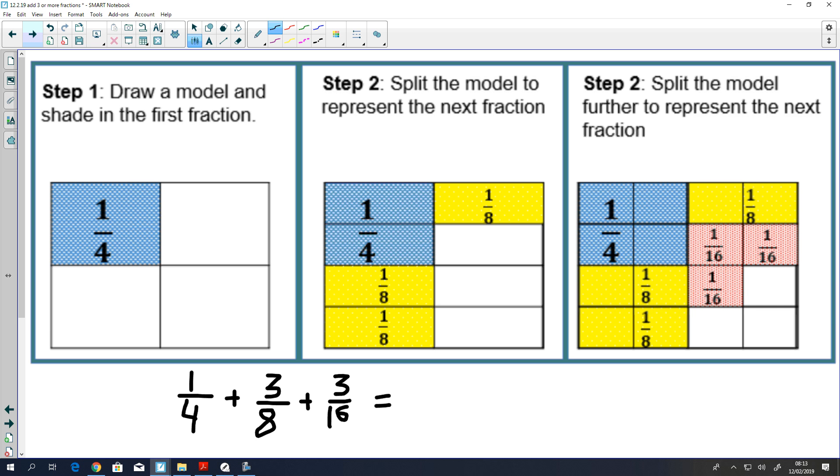Here is an area model representation of the question below: one quarter plus three eighths plus three sixteenths. It's like what we saw yesterday. You shade in your first part, split with the smallest denominator, the fourth. Then we split to make it eight parts in the second step, and then split to make 16 parts in the third step.